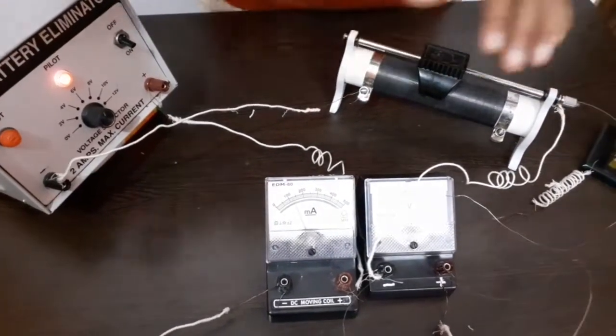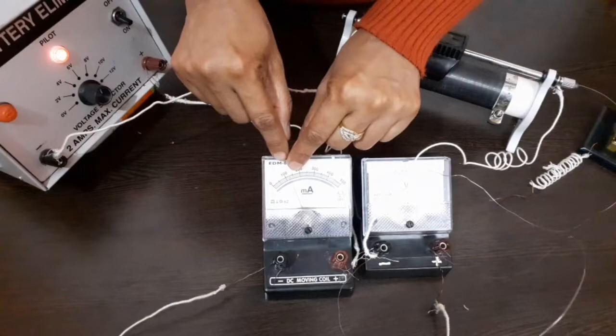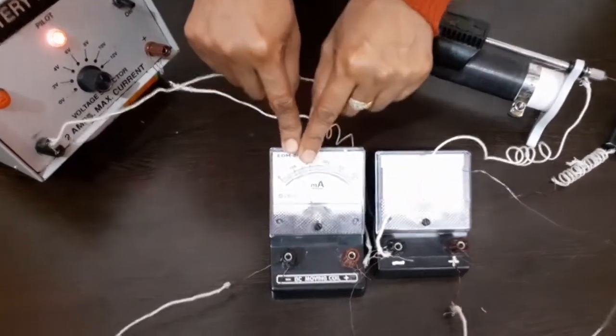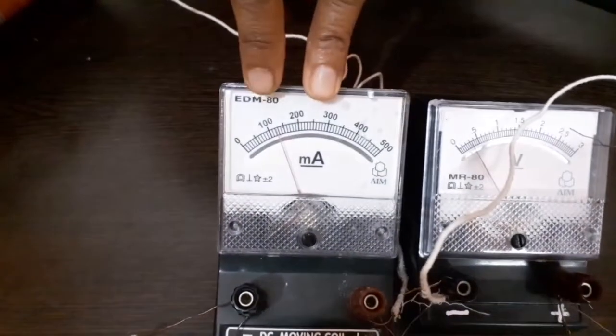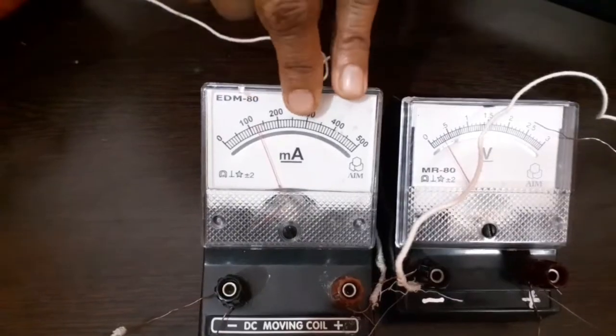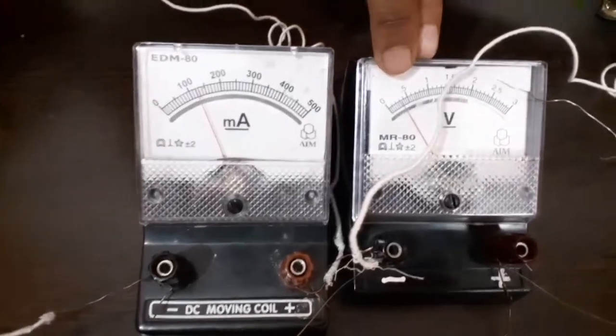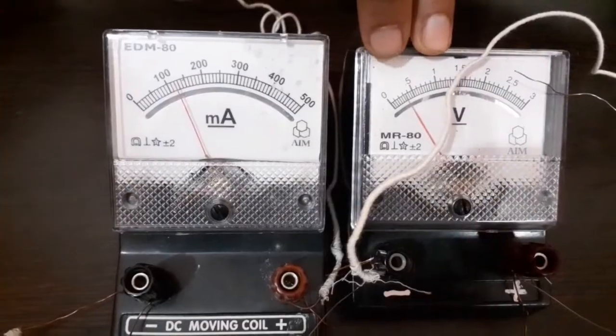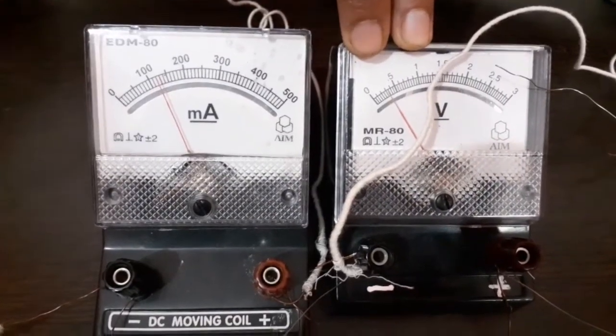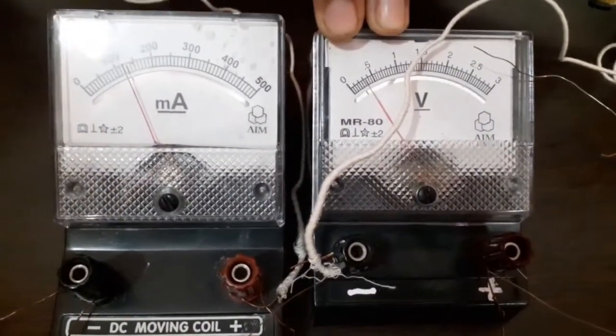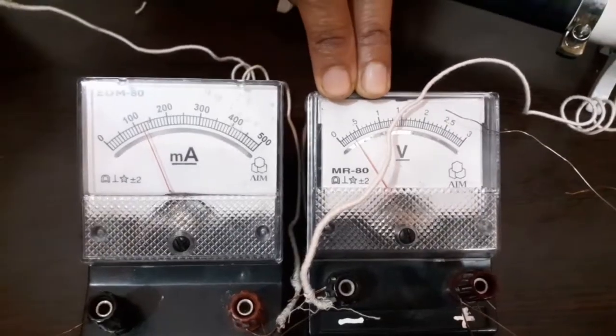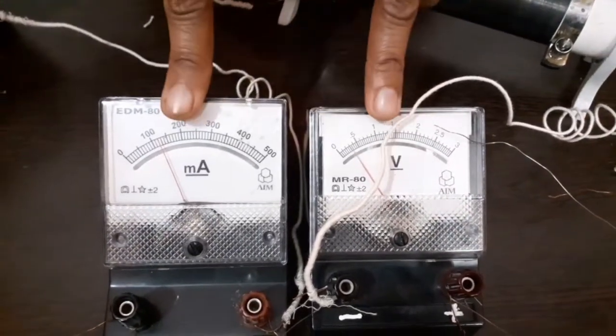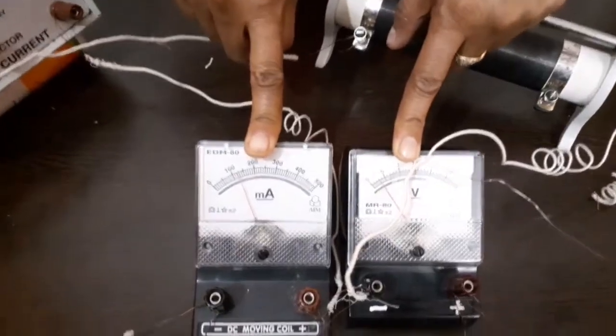Let us read one value. So at this value, it is showing 12 divisions. 12 divisions means it will be 120 mA. This one is showing five divisions. Five divisions multiplied by 0.05. It will be 0.25 volt. And when we divide V upon I, we will be able to get the value of resistance.